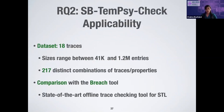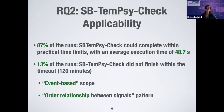For answering RQ2, we relied on a dataset of 18 traces whose sizes range between 41K and 1.2 million entries, leading to 217 distinct combinations of traces and properties after pre-processing. The results show that for 87% of the runs, SBTAMC Check could complete within practical time limits — the average execution time was even less than one minute. However, for the remaining 13% of runs, our tool did not finish within the timeout set to 120 minutes, due to either an event-based scope or an order relationship between signal patterns.